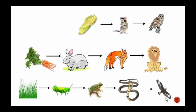Here we have a very basic food chain, very easy to follow. Let's take a look at the middle one. We have a rabbit, which is a consumer, and carrots, which are our producer. We can say the rabbit is one step away from the producer.